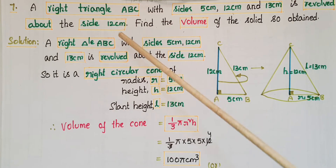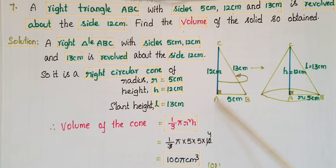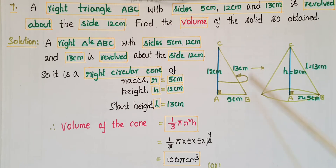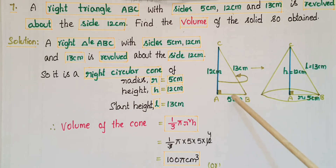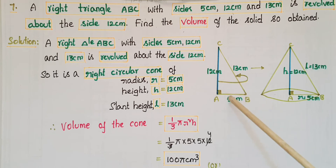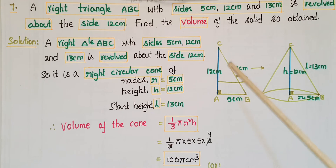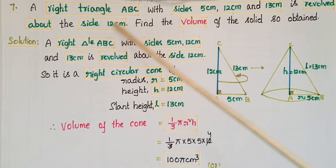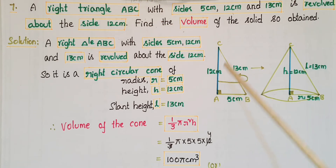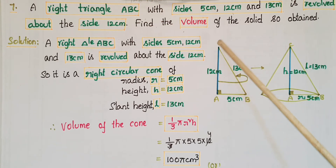Here this is the right triangle ABC and angle A is equal to 90 degrees, and this is the hypotenuse. We take the sides as 12 centimeters and 5 centimeters, because 12 squared plus 5 squared equals 13 squared. This triangle is revolved about the side AC, that is 12 centimeters.